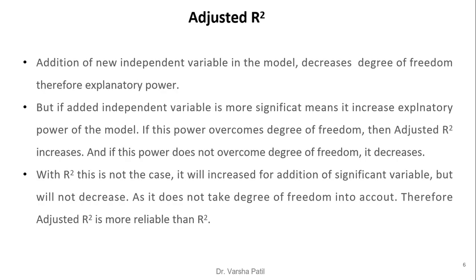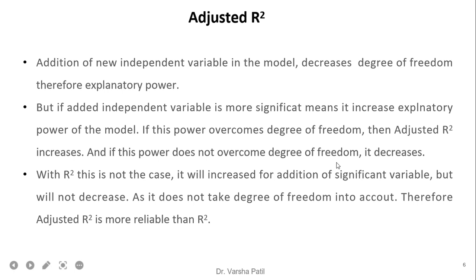With adjusted r-square, addition of a new independent variable in the model decreases degree of freedom and therefore the explanatory power. Because our formula is n-k-1, when we add a new variable, degree of freedom decreases. But if the added independent variable is significant, it increases the explanatory power of the model. If this power overcomes the loss due to degree of freedom, then adjusted r-square increases; if it does not overcome, it decreases.